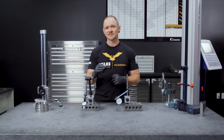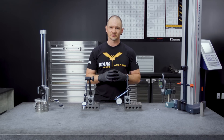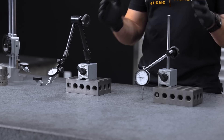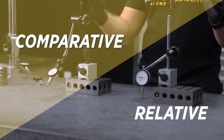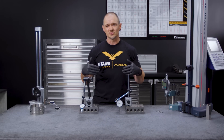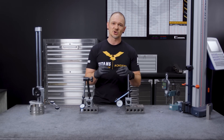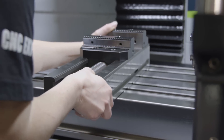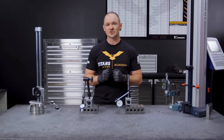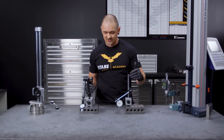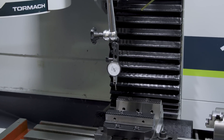In application, the indicator is usually used in what we call comparative or relative measurement — a measurement that considers how a feature should be, say a jaw vise being perfectly parallel to your X-axis on a machine table, versus where that feature actually is, say 0.015" off parallel. The indicator helps us compare those two surfaces.